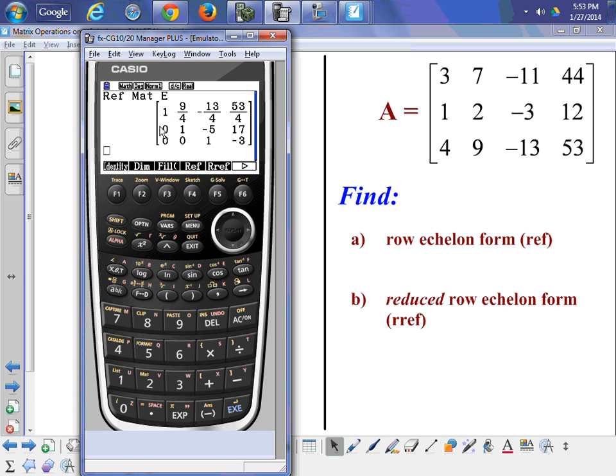Notice the diagonal of ones and zeros in fraction form. If you want decimal form, just hit the FD key. Or vice versa - if you had decimals and want fractions, hit the FD key and it toggles back and forth.